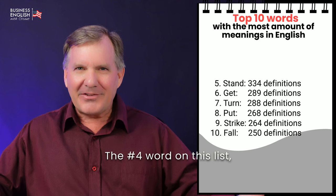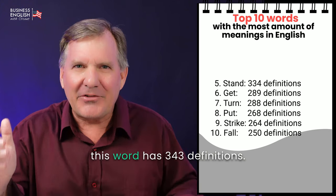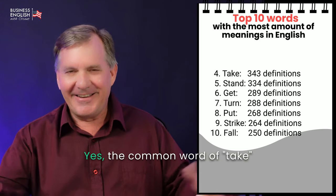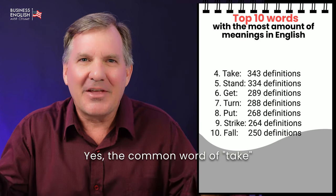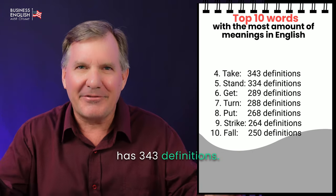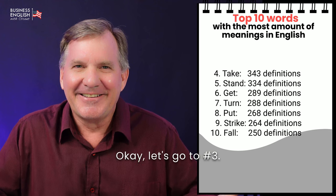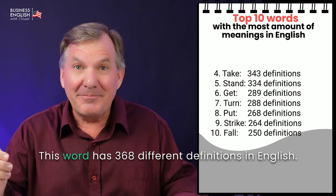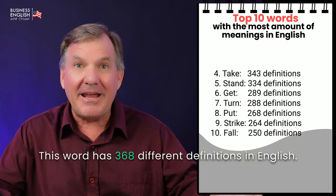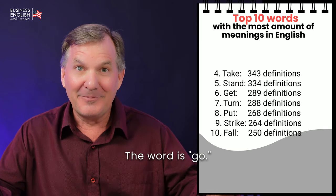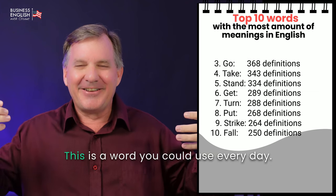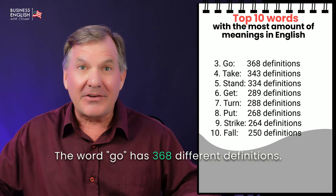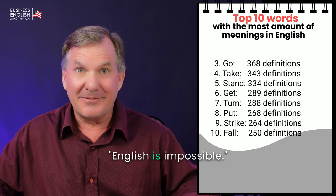At number four, the word 'take' has 343 definitions. Yes, the common word take has 343 definitions. At number three, here's a word everybody knows. This word has 368 different definitions in English — the word is 'go.' The word go has 368 different definitions. English is impossible.